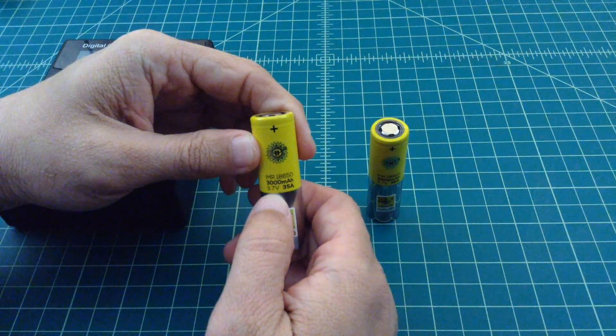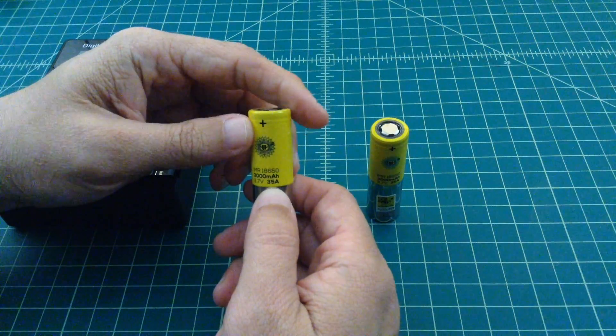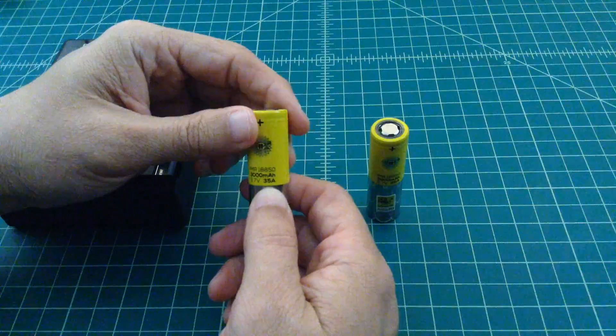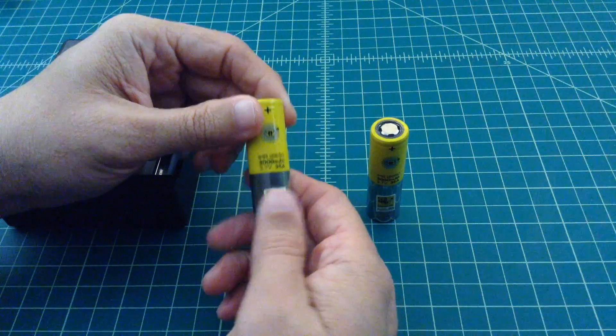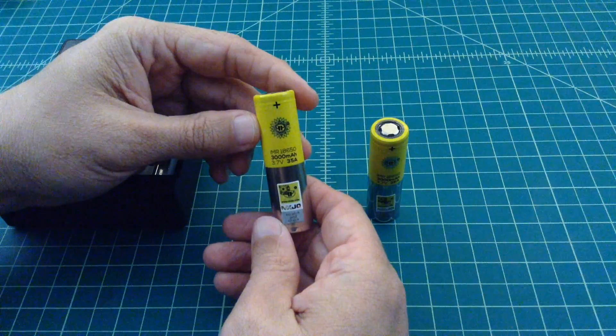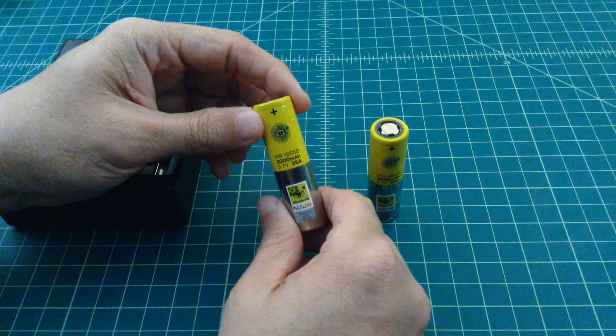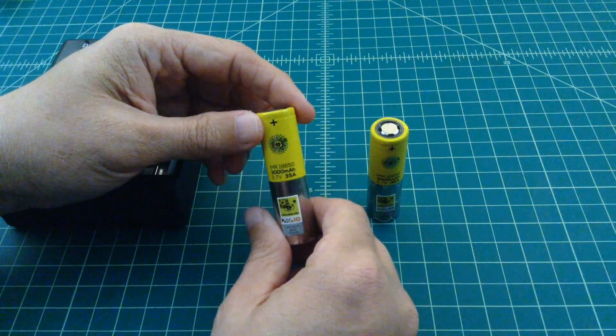Now this says 3.7 volts at 35 amp hours. Now this is a burst rate. This isn't a continuous discharge rate. And burst rates really don't mean a whole heck of a lot. Now batteries like this will typically be used with a flashlight or some other kind of device like a vape, like a vape device, vape mod. And that's what I'm going to use these in.